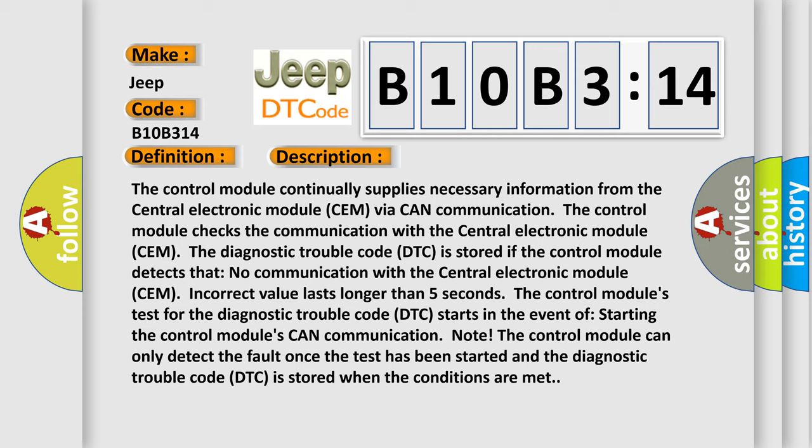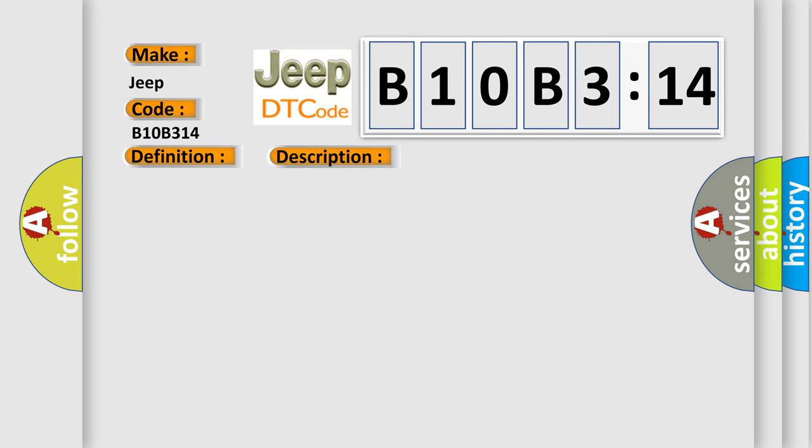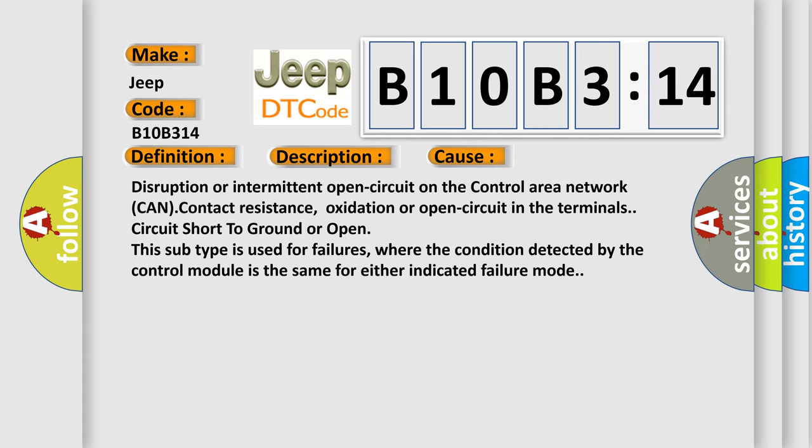This diagnostic error occurs most often in these failure cases: disruption or intermittent open circuit on the control area network CAN contact resistance, oxidation or open circuit in the terminals circuit short to ground or open. This subtype is used for failures where the condition detected by the control module is the same for either indicated failure mode.